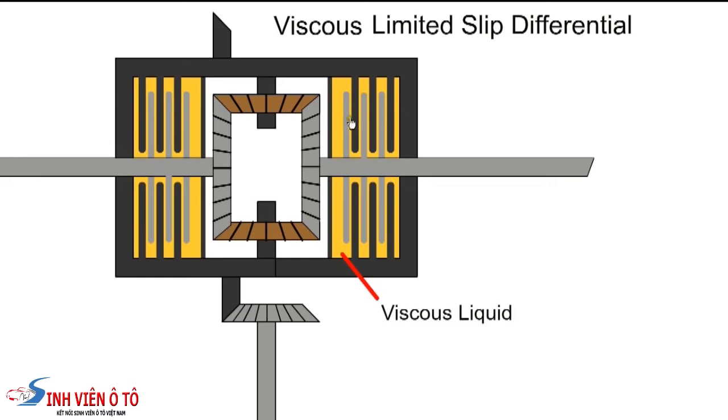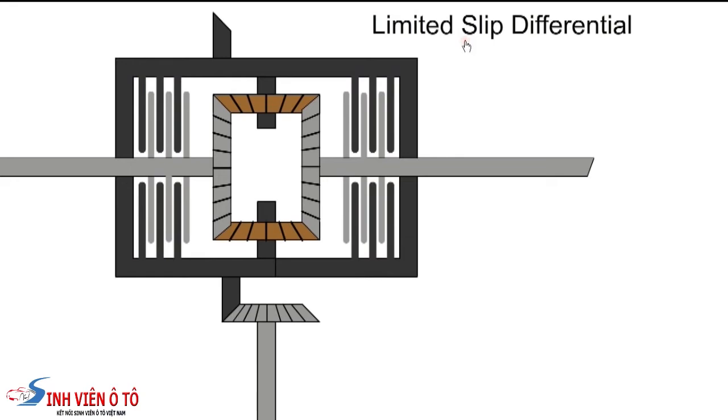When the car travels in a straight line, both sets of plates rotate together. If one wheel slips, the plates will rotate at different speeds. The viscous fluid will allow slow relative movements of the shafts during cornering, but will oppose a high-speed difference with a slipping wheel. This type of LSD is activated by a difference in speed between the plates.